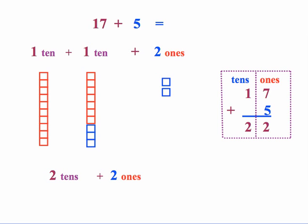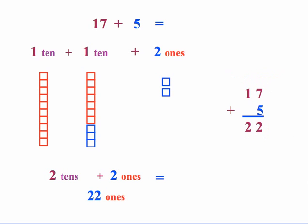Same situation over here. We went ahead and did our combining. And let's get rid of our columns so it looks more like what we would typically see in the vertical format. And so now our 2 tens and 2 ones are combined to be just 22, which in fact is 22 ones.